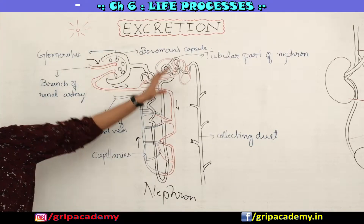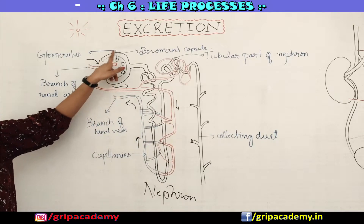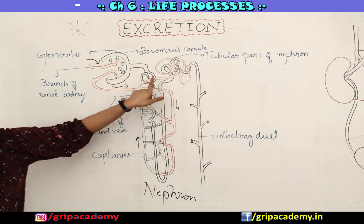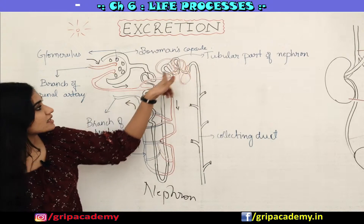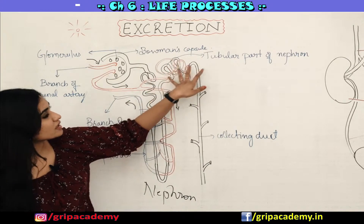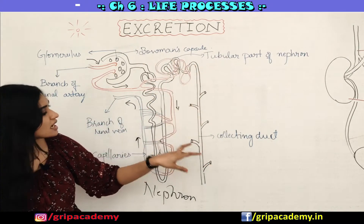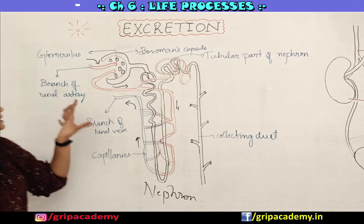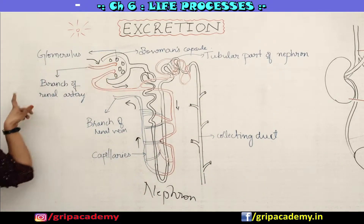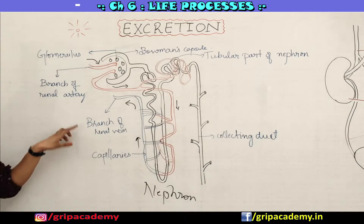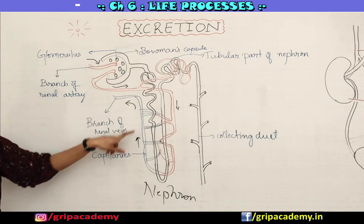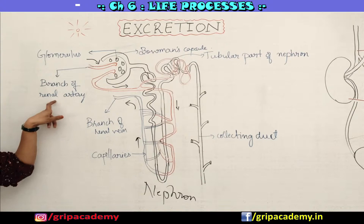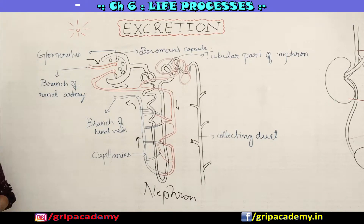This is how a nephron looks like. You can see there is a cup-like structure called the Bowman's capsule, and this region which is in a tubular shape is called the tubular part. This is how the collecting duct looks like. This is the glomerulus, this is a branch of the renal vein — these are all capillaries — and this is also a branch of the renal artery.